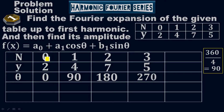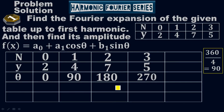The theta values are found by multiplying 90 by each N value: theta for N=0 is 0° (0×90), for N=1 is 90° (1×90), for N=2 is 180° (2×90), and for N=3 is 270° (3×90). Remember to multiply 90 by the N points, not the Y values.